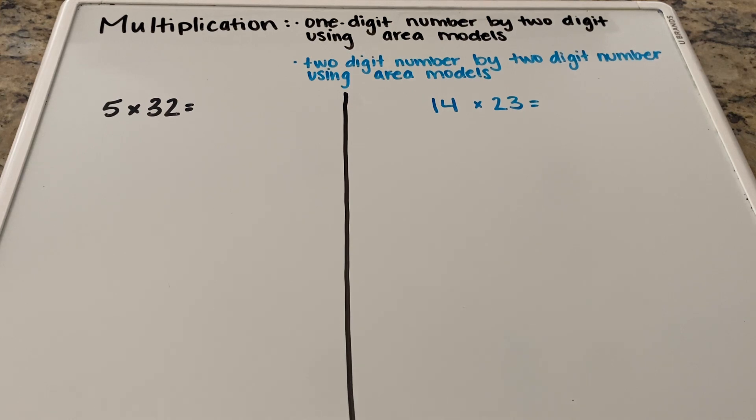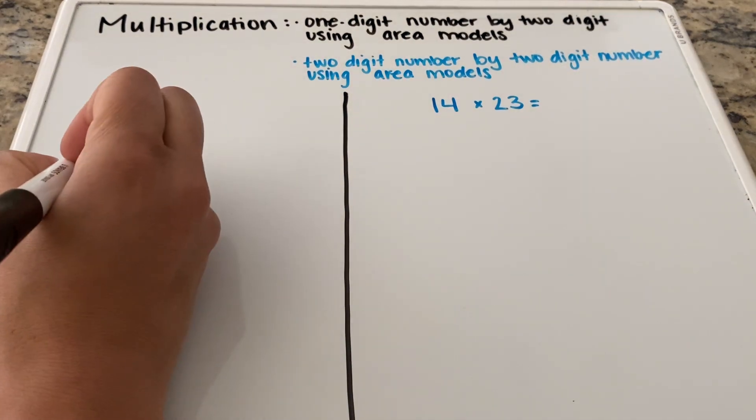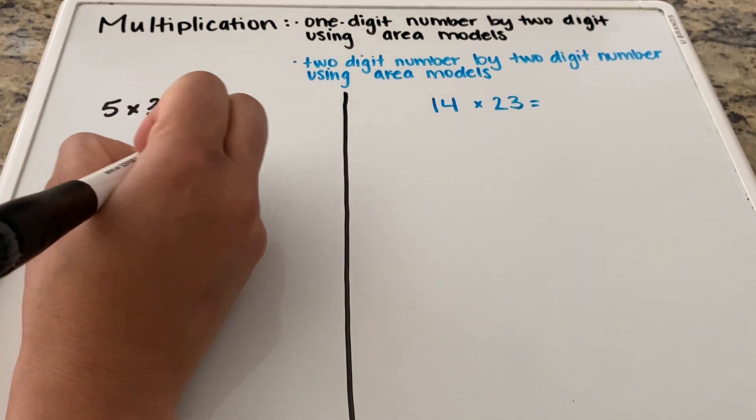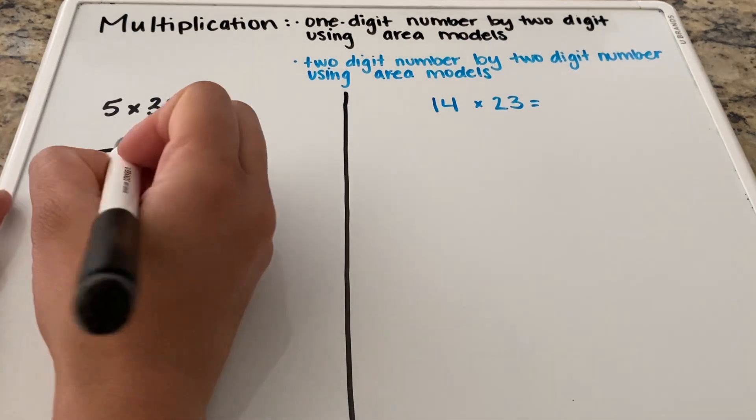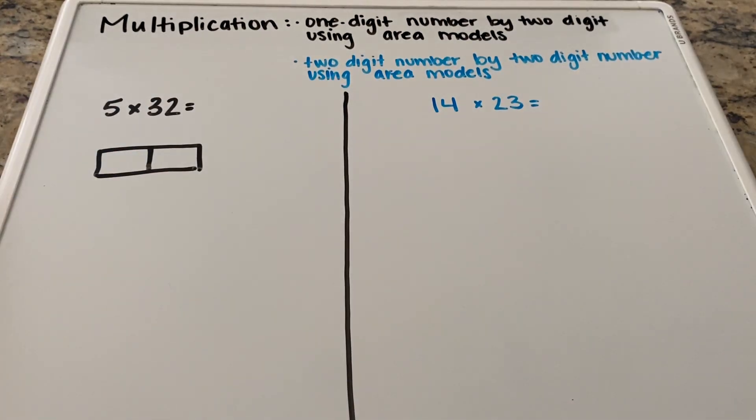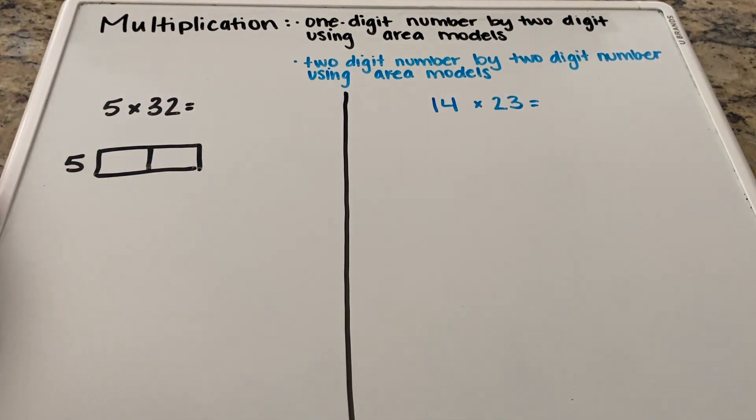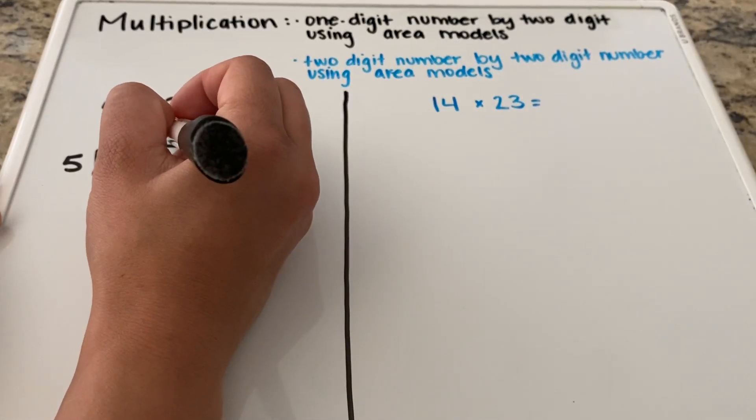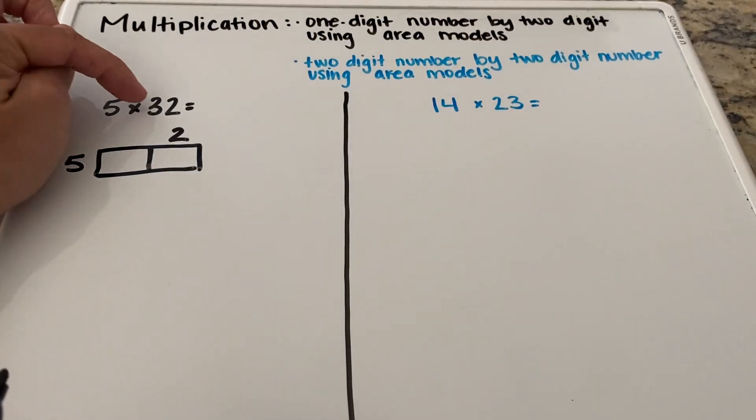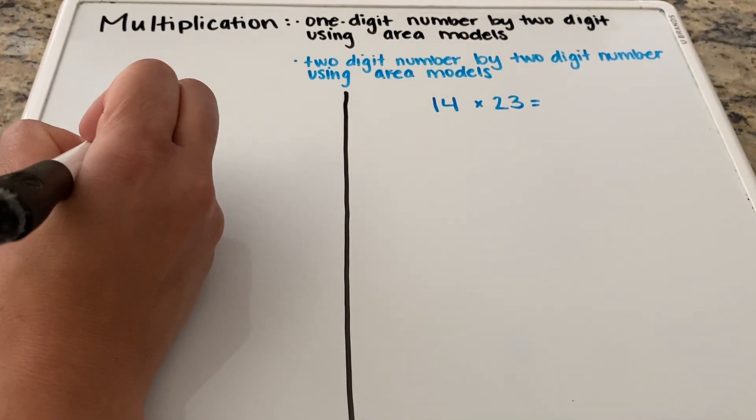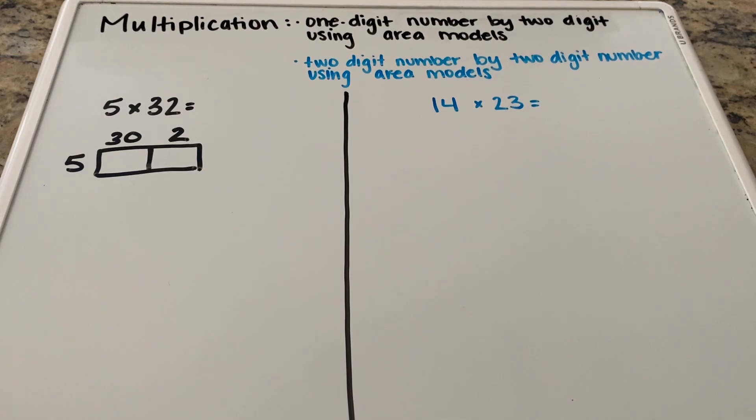On the left side is going to be our one-digit by two-digit. When we have a one-digit by two, what we're going to do is break it down by our area model box which will be a one by two. We'll break down the five which is just going to be five in our ones place. Then we got to break down the 32 with our two boxes. Our two is in our ones place, and then our three is in our tens place and we'll put in a zero for our filler and now we have our area model.